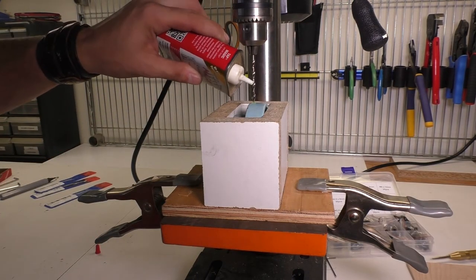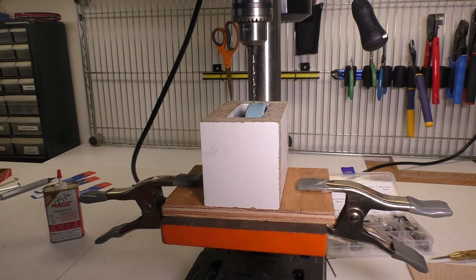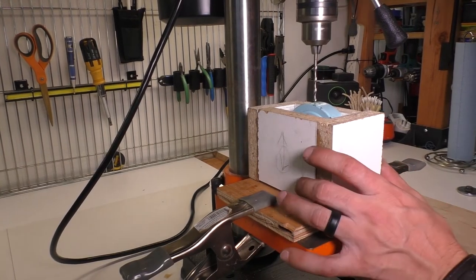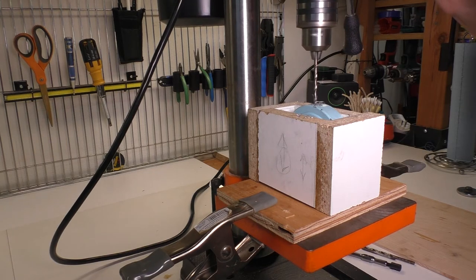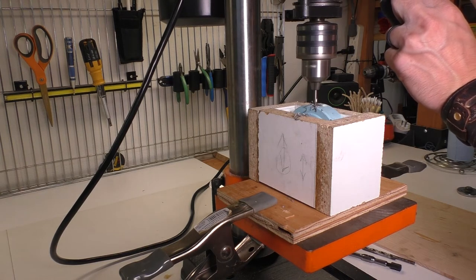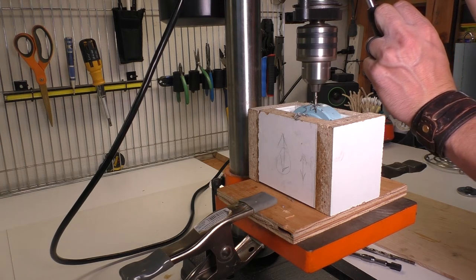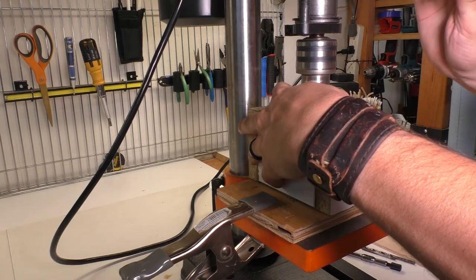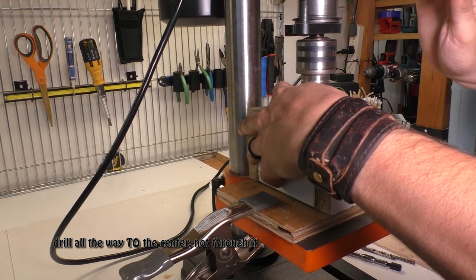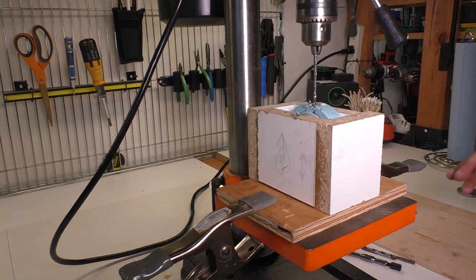Put some eye protection on, of course. There will be little bits of metal floating around here. If you have it, put a little bit of tap fluid, tap oil on the bit. Turn the machine on, let's get our first hole started. All right, let's do this. Drill all the way through the center.